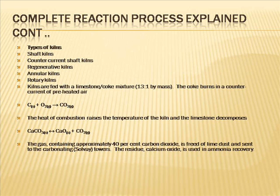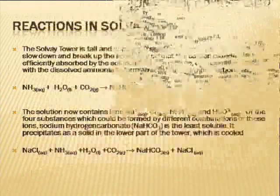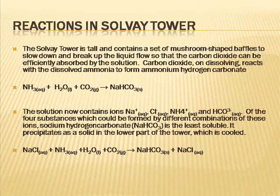Types of kilns used include shaft kilns, counter-current shaft kilns, regenerative kilns, annular kilns, and rotary kilns. Kilns are fed with a limestone/coke mixture at a 13:1 ratio by mass. The coke burns in a counter-current of preheated air: C(s) + O2(g) → CO2(g). The heat of combustion raises the temperature of the kiln and the limestone decomposes: CaCO3(s) → CaO(s) + CO2(g).